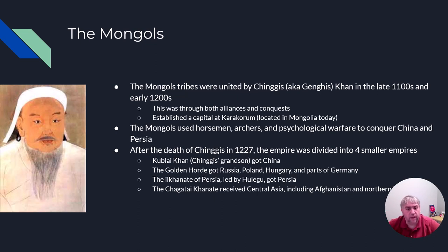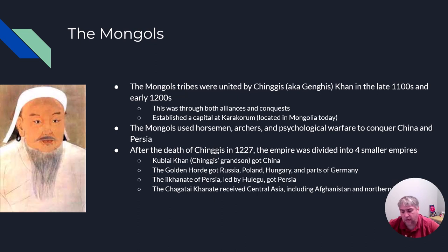The Mongols even had a functioning mail system. Each messenger would ride about 25 miles from one station to the next, and each relay station had households it serviced — kind of like a post office today. All told, the Mongol mail system had over 1,400 postal stations, over 50,000 horses, 4,000 carts, and something like 6,500 boats.